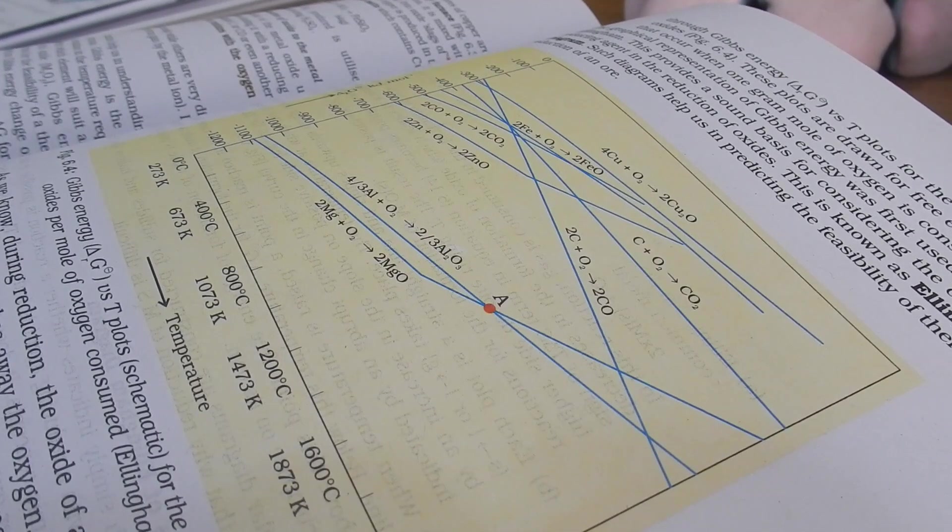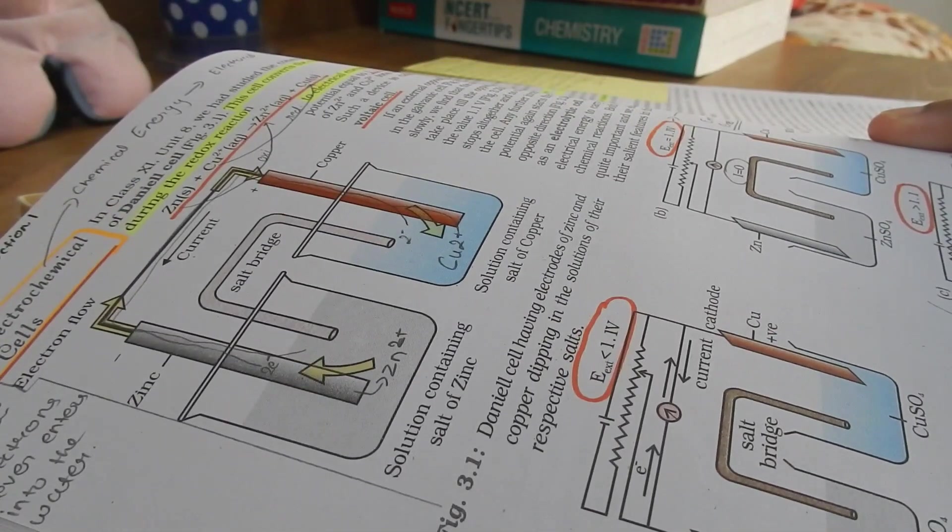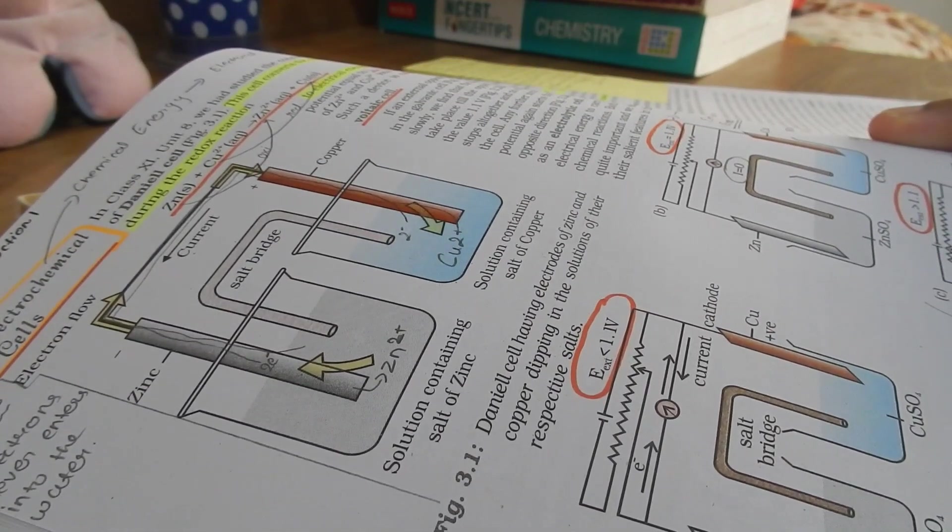Fourth is diagrams. Treat each and every diagram in chemistry book the same way you do for biology. Draw it, memorize the labelings, and then repeat it.